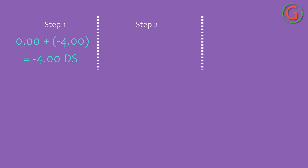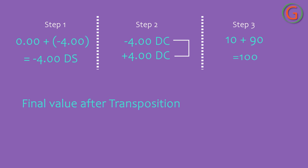Step 2: Change the sign of the cylindrical power — minus 4.00 diopter cylindrical becomes plus 4.00 diopter cylindrical. Step 3: Change the cylindrical axis by 90 degrees. 10 plus 90 degrees is equal to 100 degrees. Hence the final value after transposition is: minus 4.00 diopter spherical with plus 4.00 diopter cylindrical at axis 100 degrees.